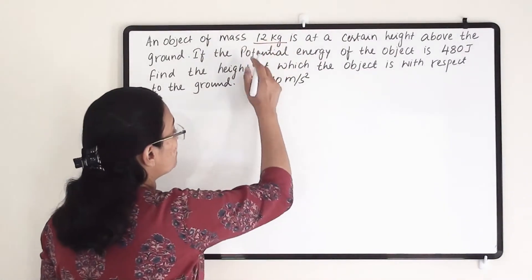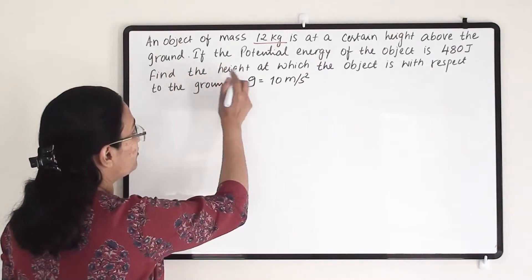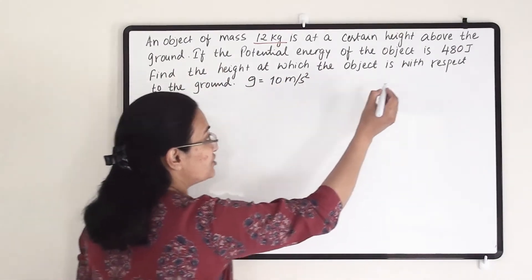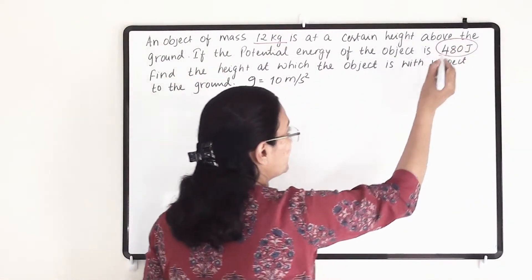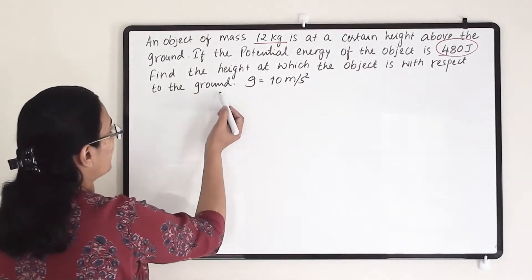12 kg is the mass of an object at a certain height above the ground. If the potential energy of the object is given, find the height at which the object is with respect to the ground.